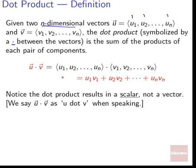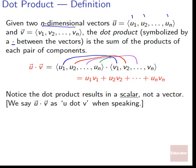So u dot v equals u1·v1 plus u2·v2, and we do this for every pair, adding each component product until we reach un·vn. We sum it all up. Notice that the dot product results in a scalar, not a vector — what we get out is just a real number. We say this as "u dot v".